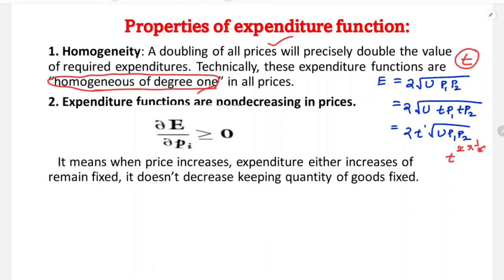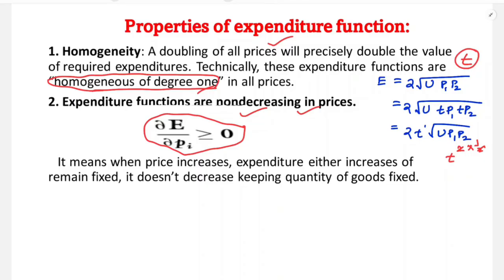The second property: expenditure functions are non-decreasing in prices. This means if the price of a good increases, expenditure either increases or stays constant — it never decreases. The derivative of the expenditure function with respect to P1 is greater than or equal to zero; it cannot be negative.